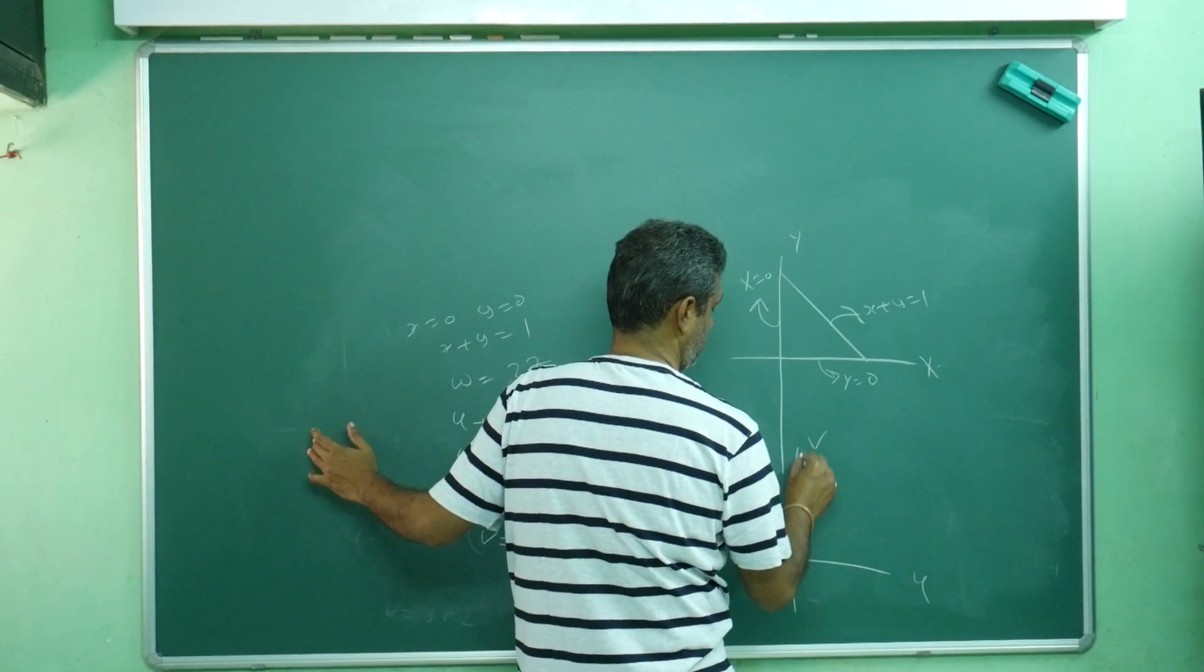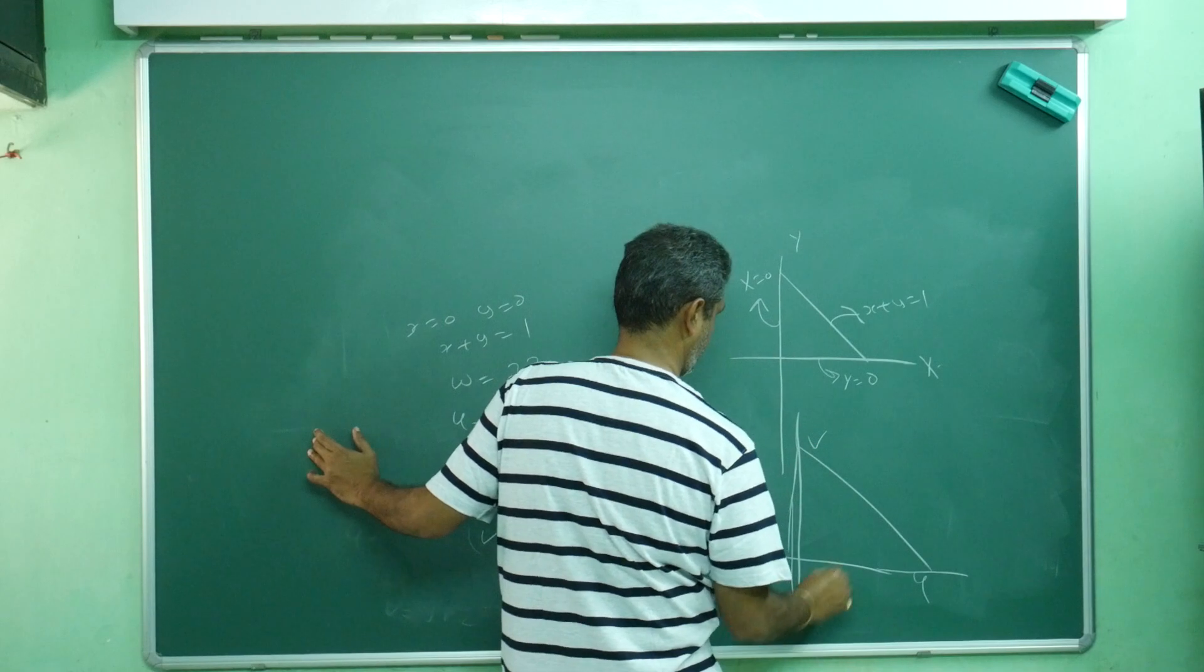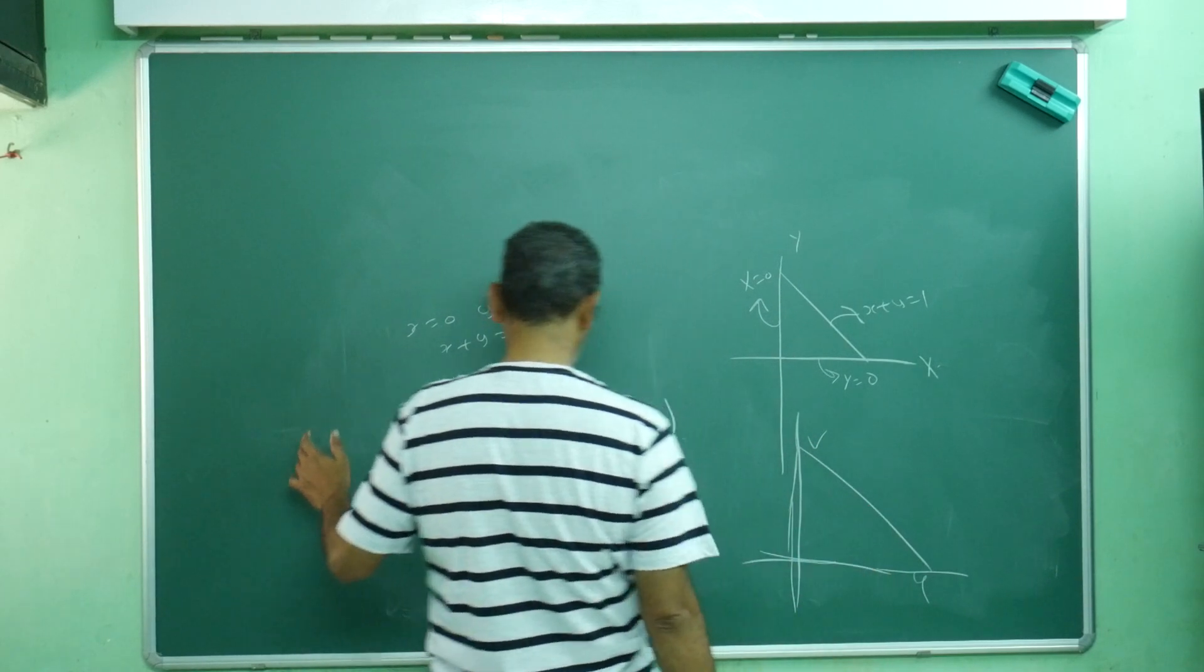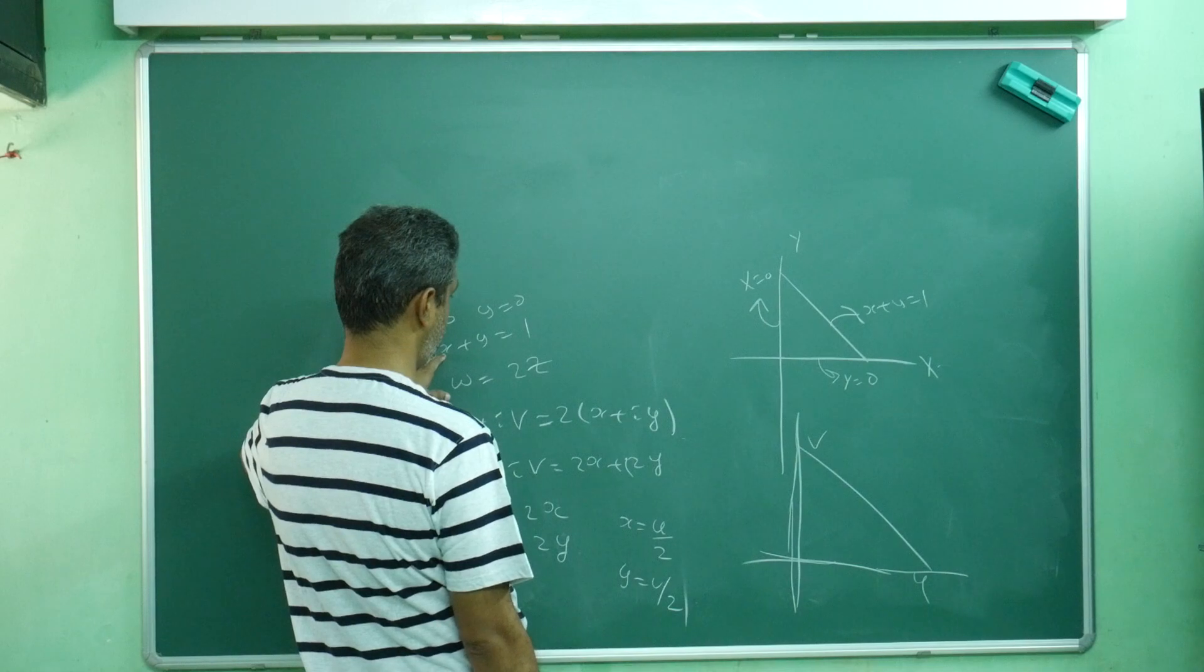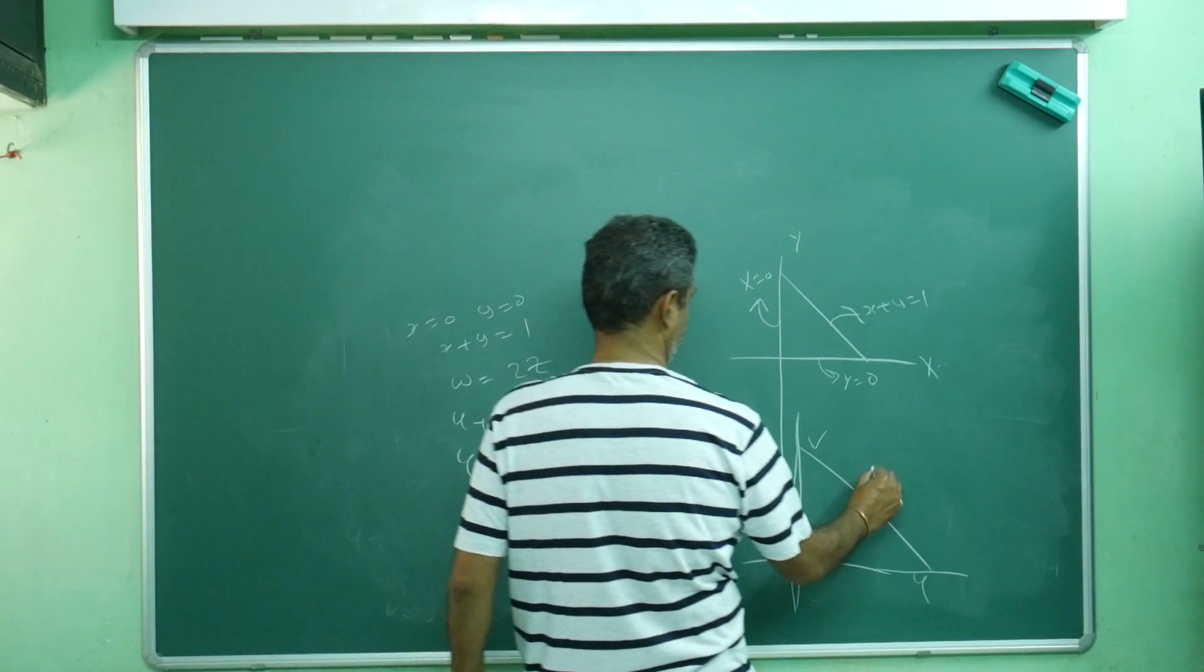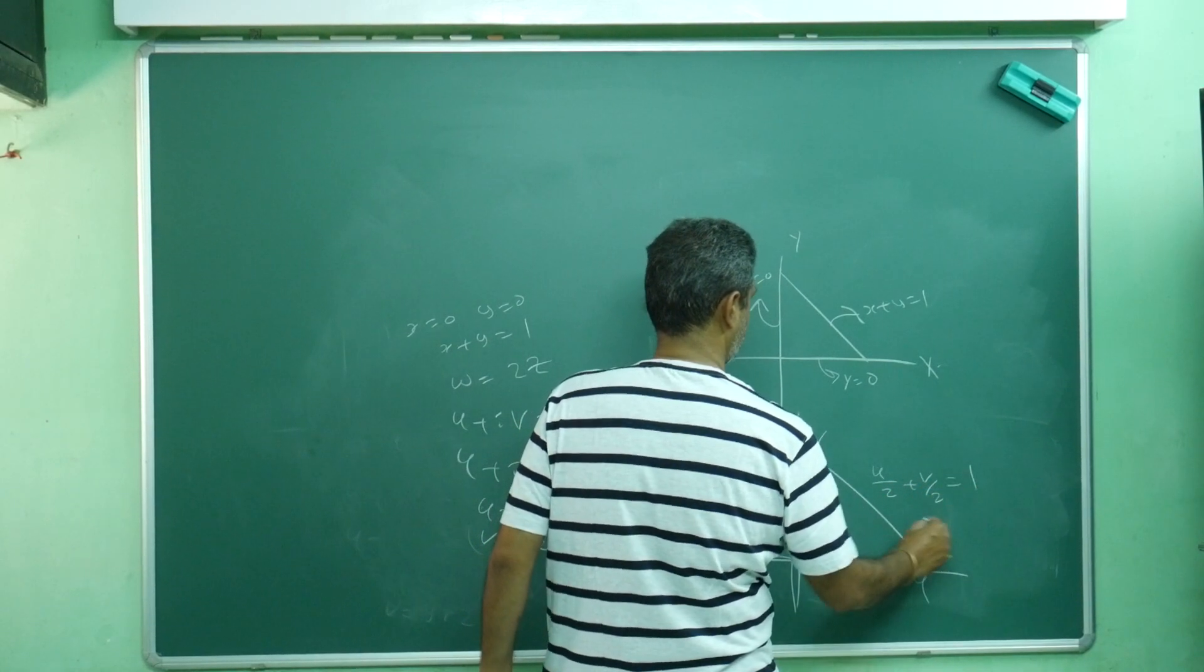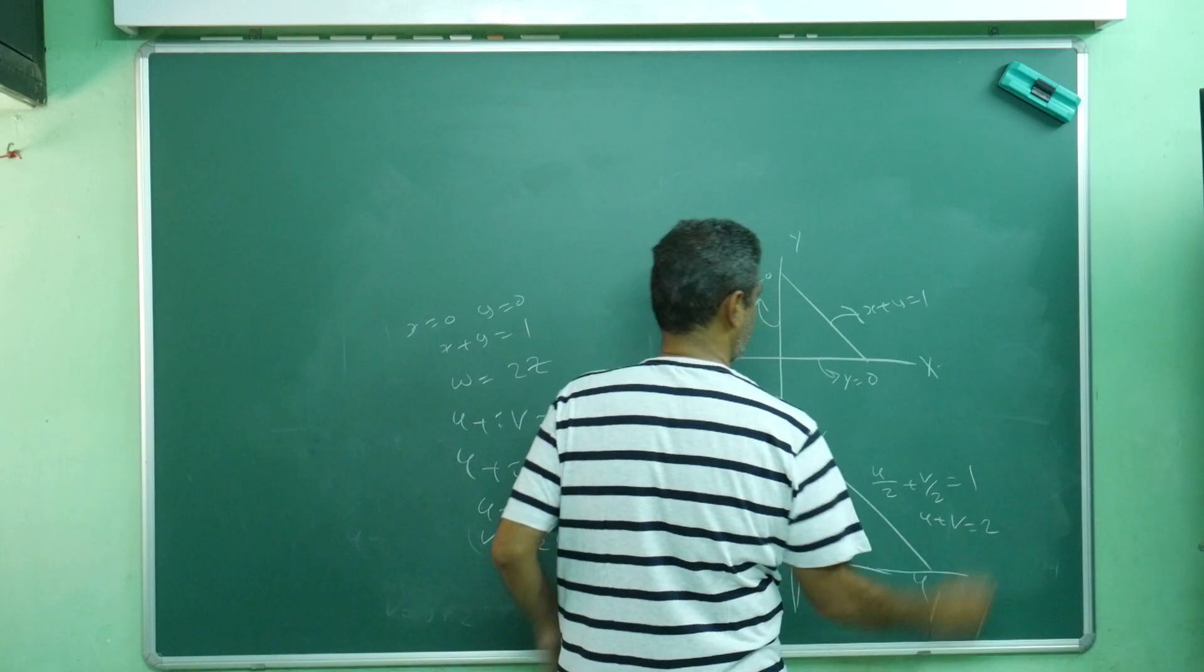In uv you will get big triangle. Go back and substitute: x = u/2, y = v/2. So u/2 + v/2 = 1, this is u + v = 2.